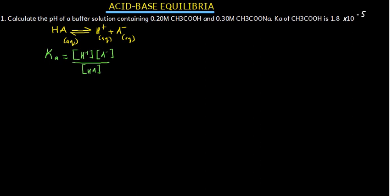Two compounds which differ from each other by one proton are called a conjugate acid-base pair. So HA and A⁻ differ from each other by one proton — they are a conjugate acid-base pair. If HA is an acid, then A⁻ is the base. From here, we can introduce negative log. Whenever you take a negative log of something, it becomes 'p' of that thing.